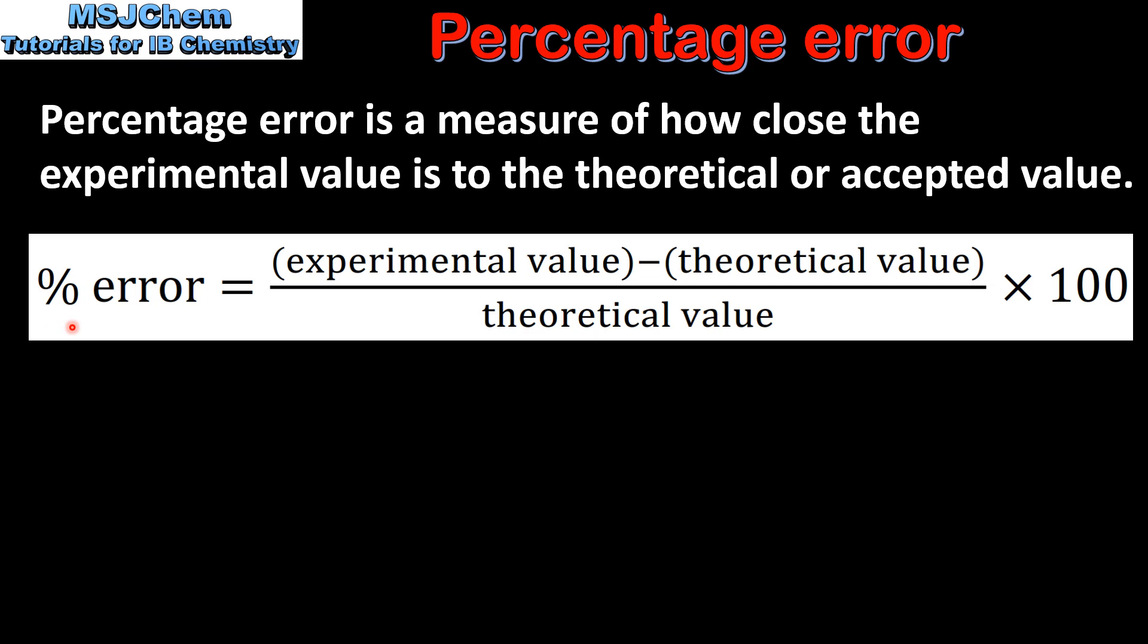Here we have the equation for calculating percentage error. Percentage error is equal to the experimental value minus the theoretical value, divided by the theoretical value, multiplied by 100.